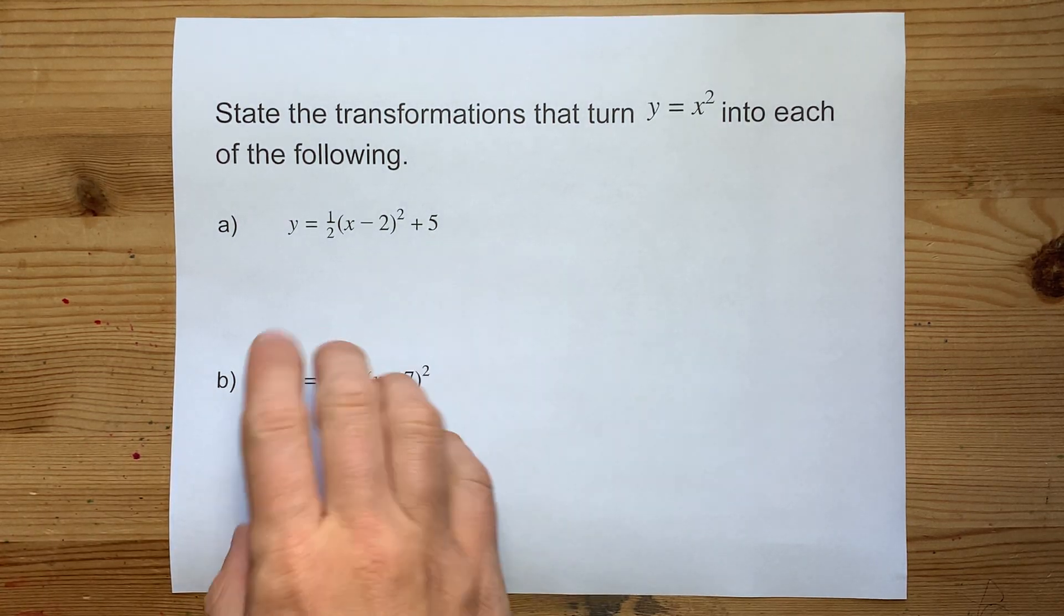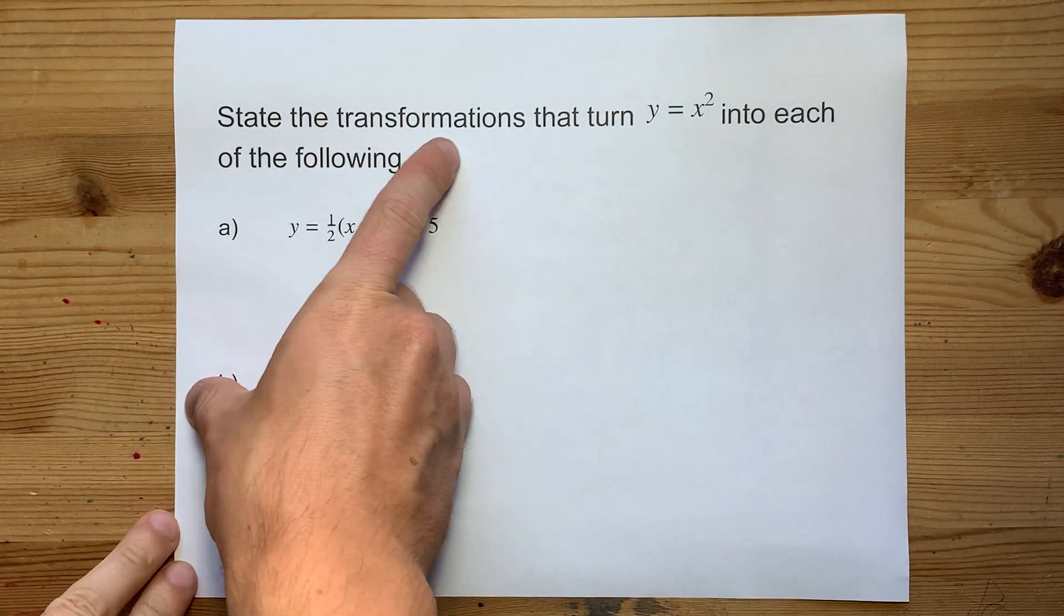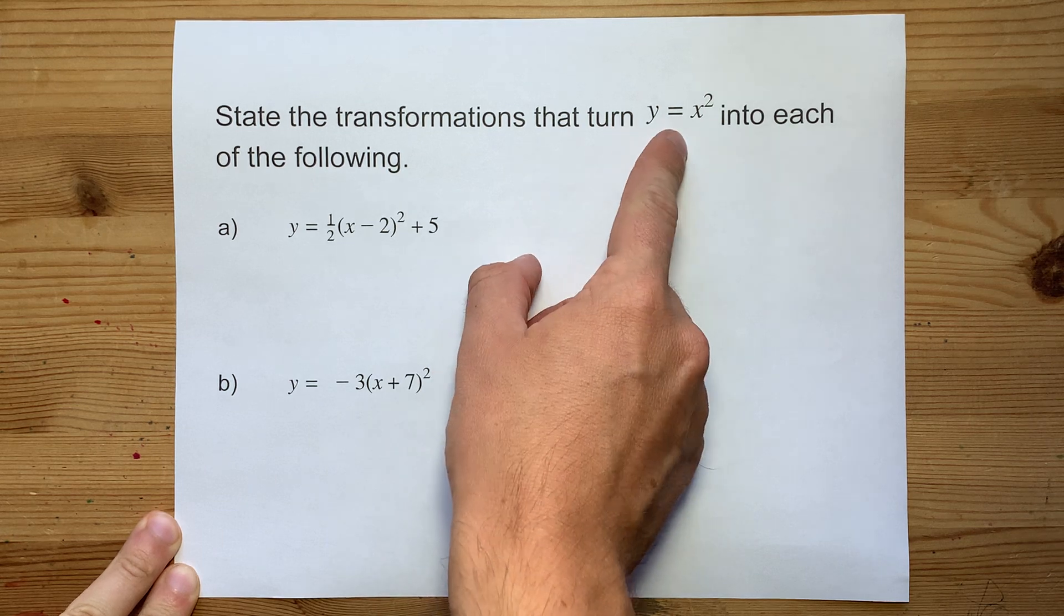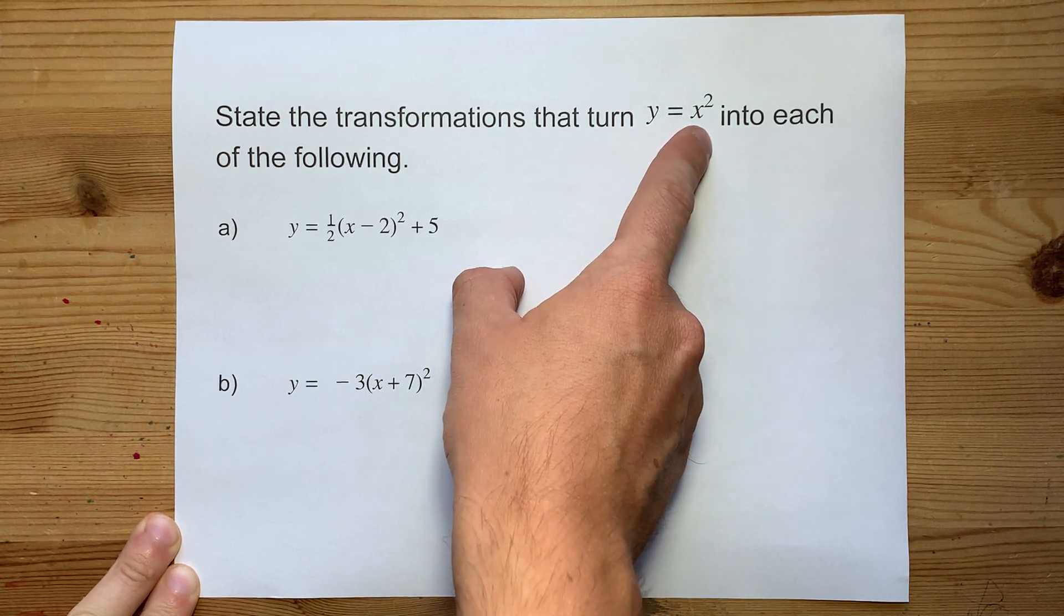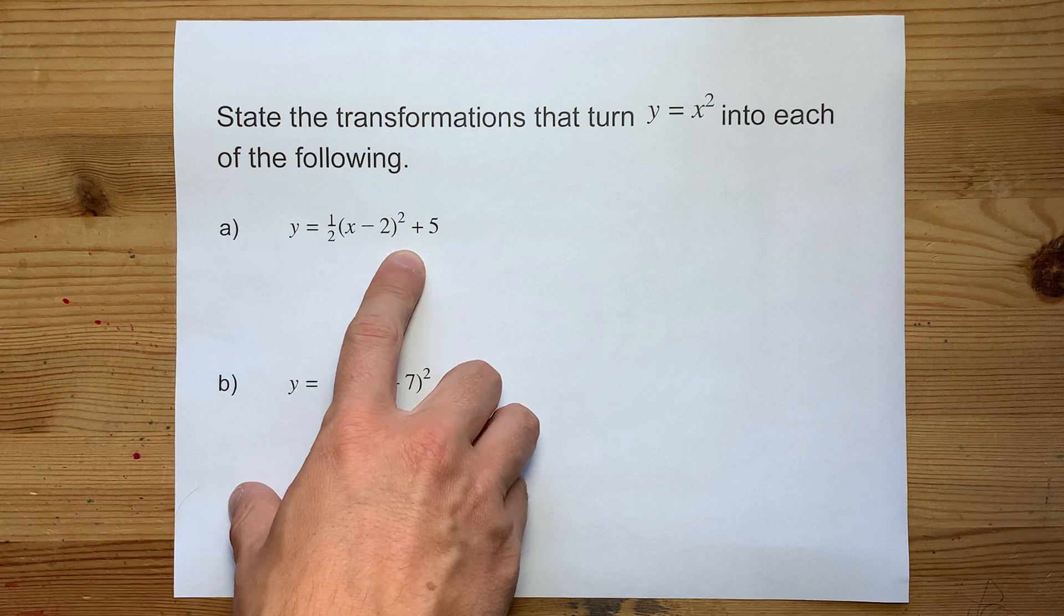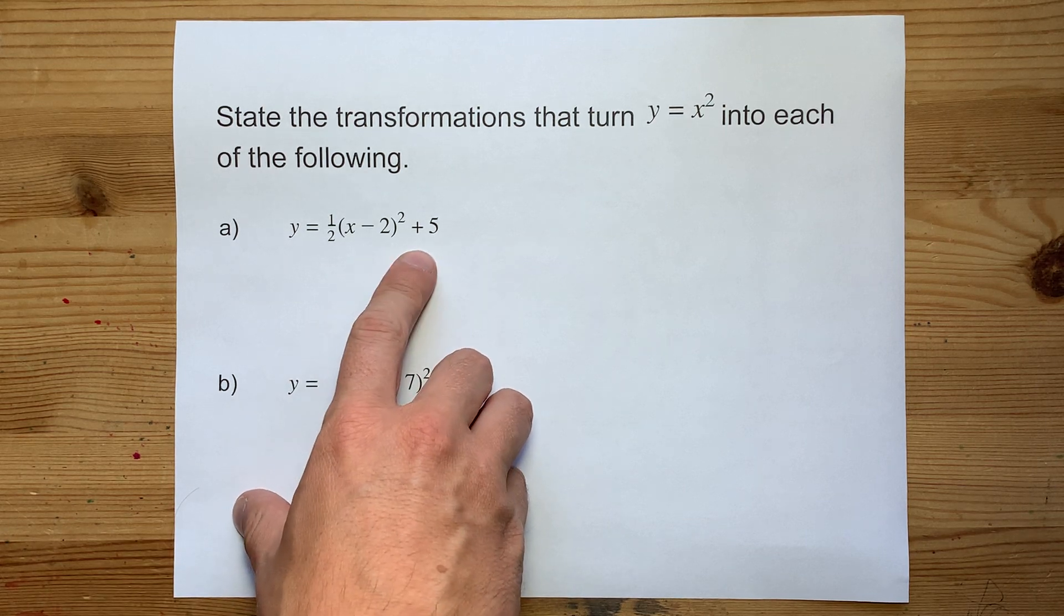I want a video showing how you can state the transformations that turn the base function y equals x squared into each of the following. Now this is a vertex form equation.